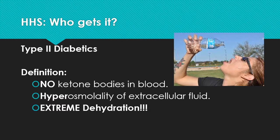A key difference between DKA and HHS: there are no ketone bodies in the blood with HHS, so there's no acidosis. The reason there are no ketones is because type 2 diabetics do have some insulin in their bodies to protect against lipolysis. Lipolysis — the breakdown of fat — is what leads to ketone bodies and the acidosis you see with DKA.